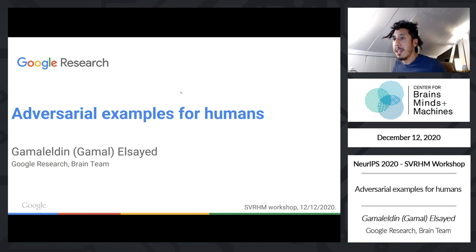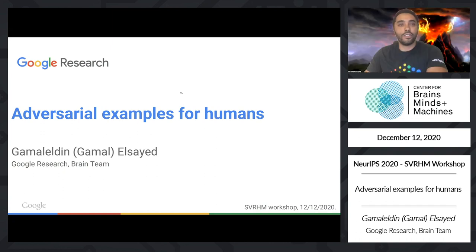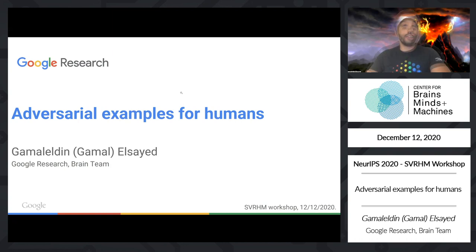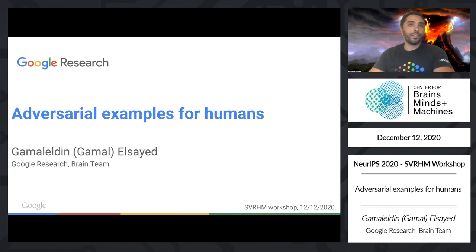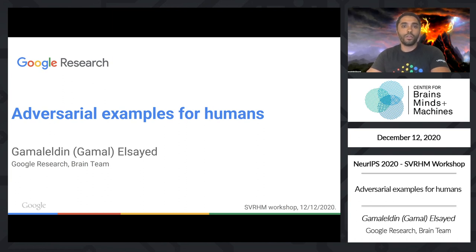He'll be speaking about adversarial examples for humans. Thank you very much for the introduction and for having me. It's great to be here in this great workshop. Today I want to talk about some of the experiments we have been doing at Google in the past two years, trying to study similarities and differences between computer vision models and our visual system.